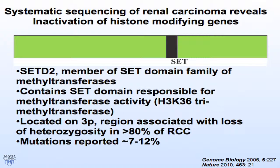SETD2 is a member of the SET domain family of methyltransferases and contains a SET domain responsible for the methyltransferase activity. Similar to BAP1, VHL, and PBRM1, it's located on chromosome 3p, which is an area associated with loss of heterozygosity in greater than 80 percent of renal cell carcinoma tumors.